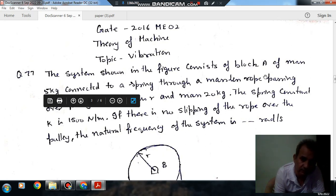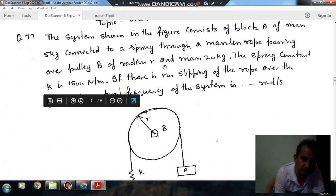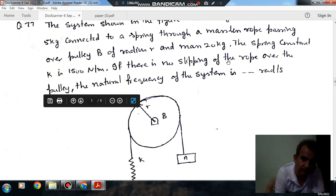The system shown in figure consists of block A of mass 5 kg connected to a spring through a massless rope passing over pulley B of radius R and mass 20 kg.